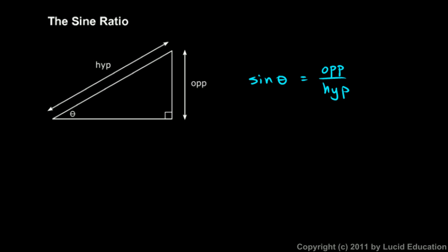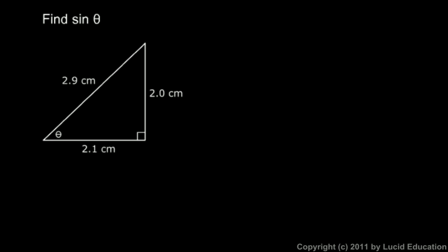But the thing I want you to understand right now is that this right here, sin theta, is read as sine theta or the sine of angle theta. It's not sin theta and it is definitely not sine times theta. This is not two things multiplied together. This is the sine of angle theta. Theta is an angle, and sine theta is a number that is equal to this ratio.